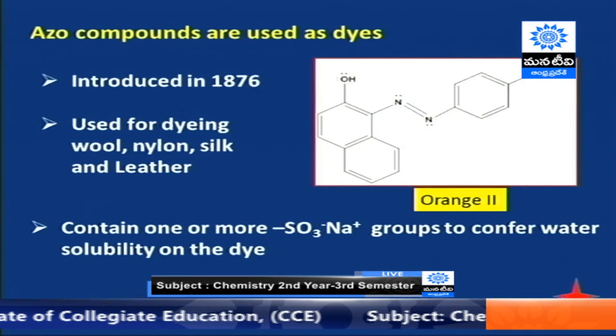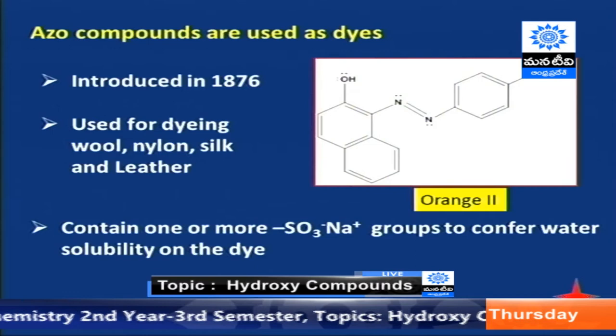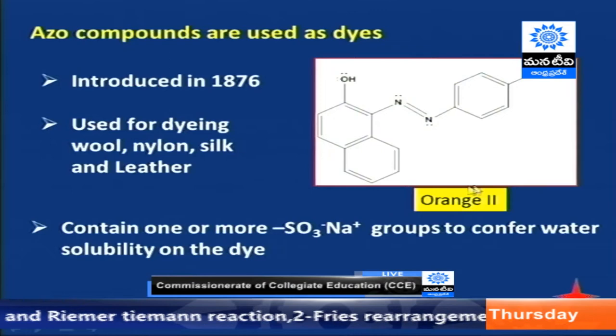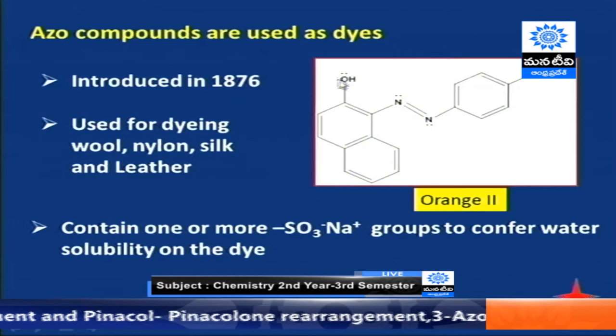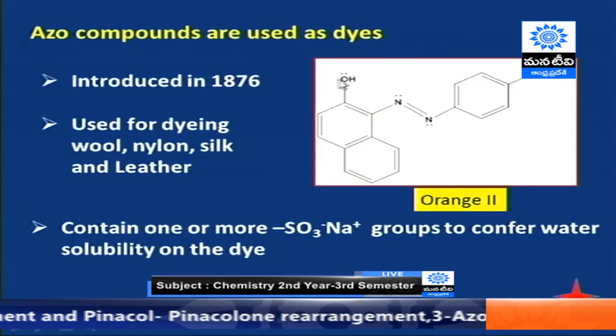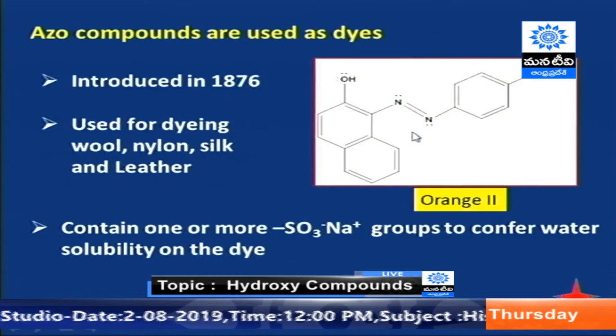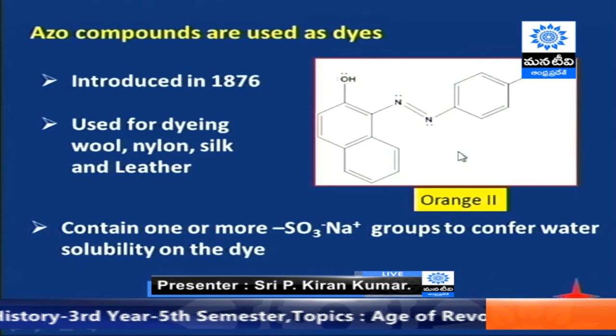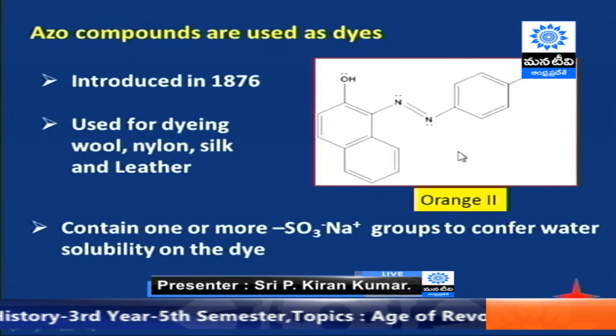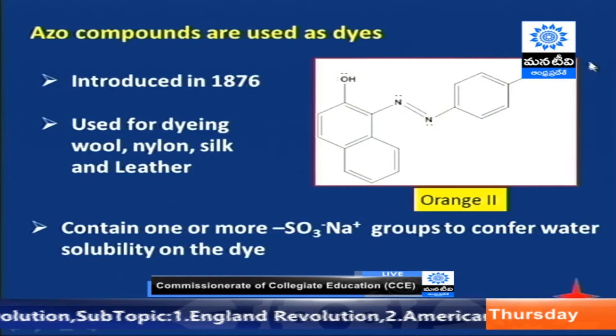An important application of the diazo coupling reaction is the formation of azo dyes. For example, Orange 2 is obtained by the reaction between beta-naphthol and the diazonium ion obtained from sulfanilic acid — that is, 4-aminosulfonic acid. This dye was first prepared in 1876 and has many industrial applications: it is used extensively for dyeing wool, nylon, silk, and leather. Generally, dyes contain the SO3- Na+ moiety, which makes them water soluble due to their ionic nature.